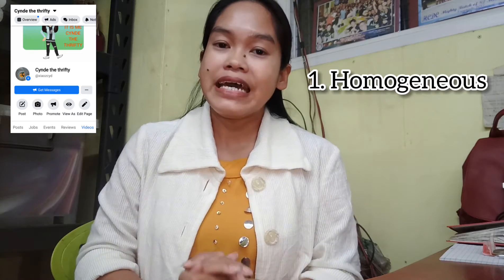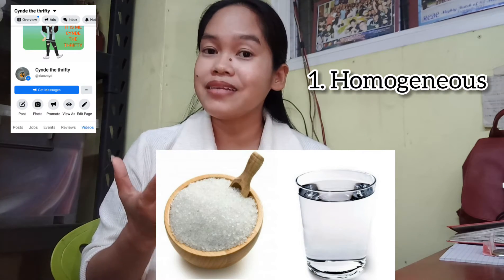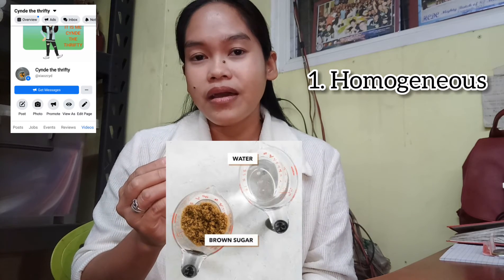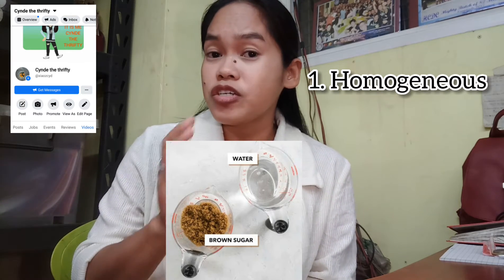Let us identify the two types of mixtures. First is the homogeneous mixture. A homogeneous mixture has a uniform composition, meaning you can't see its particles. For example, when you add salt into water and mix them together, you can't identify where the salt is because it dissolves. That is what we call a homogeneous mixture. Another example is sugar and water — when you mix them together, you can't identify where the sugar is because it is already dissolved.